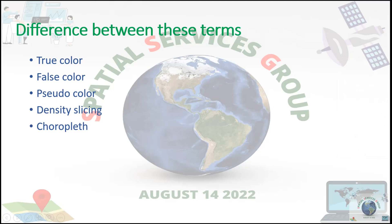Difference between these terms: true color, false color, pseudo color, density slicing, and choropleth.